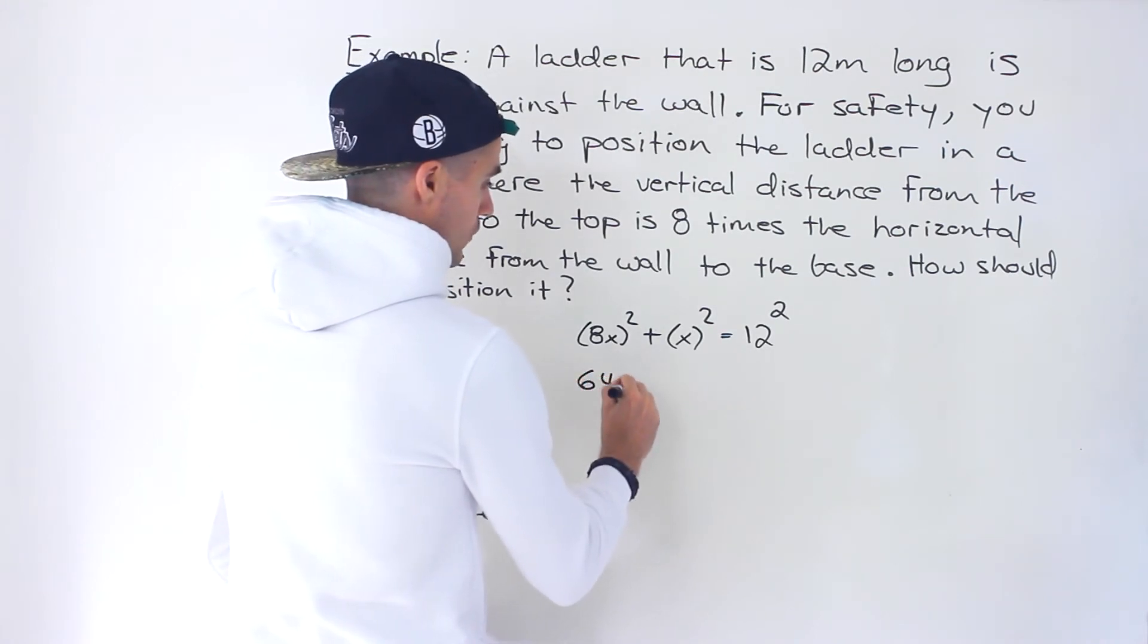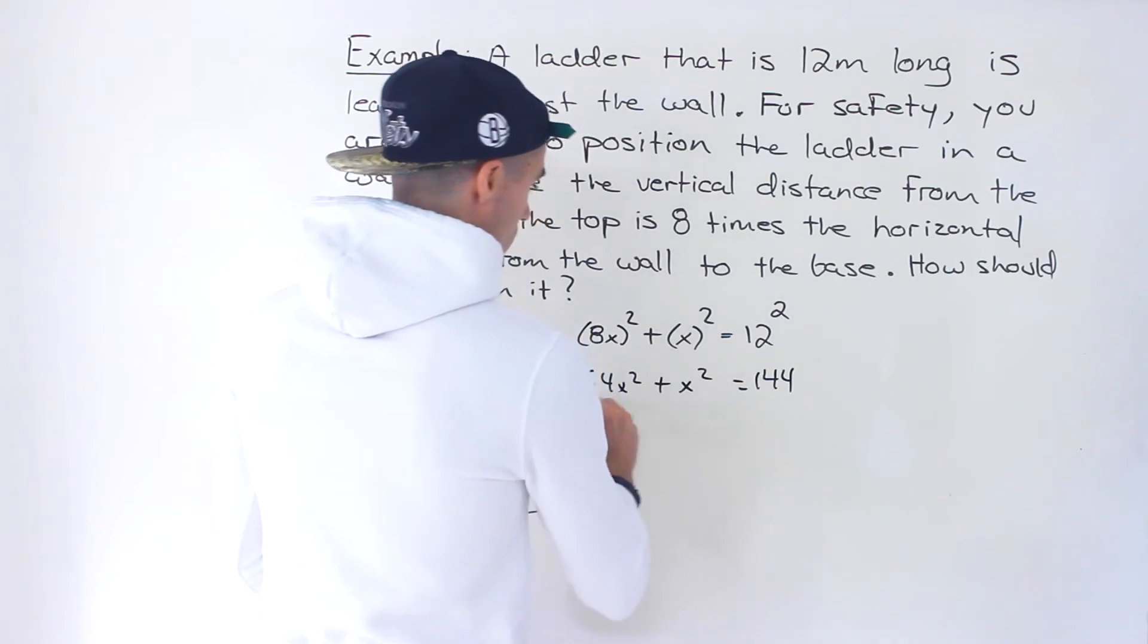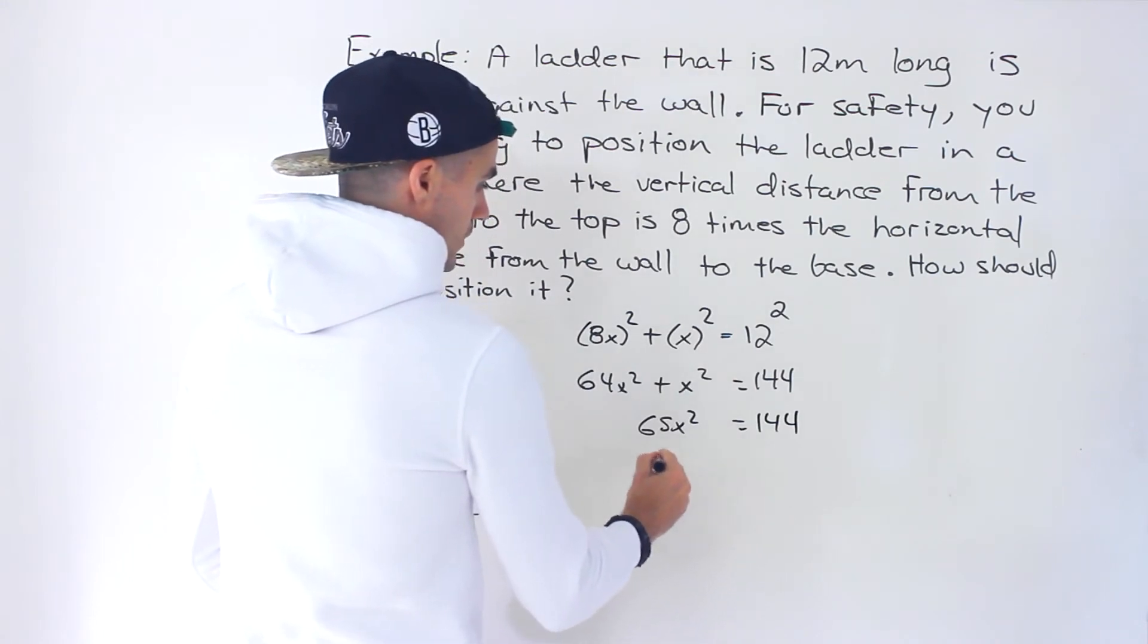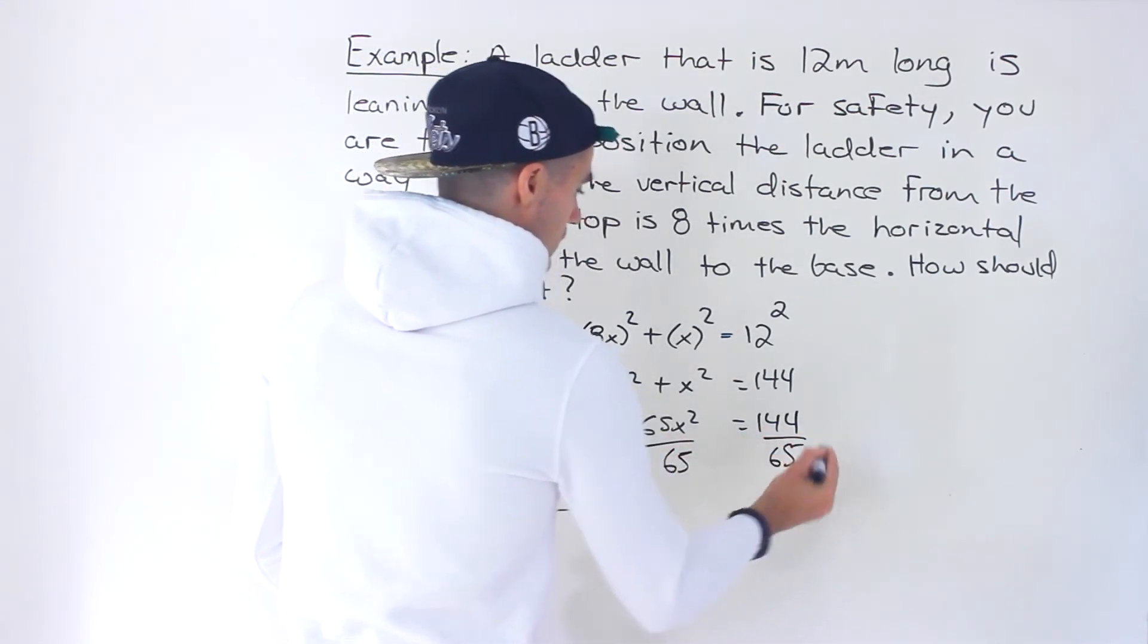From here we end up with 64x squared plus x squared equals 144. These are like terms so we have 65x squared equals 144, and then we divide both sides by 65.